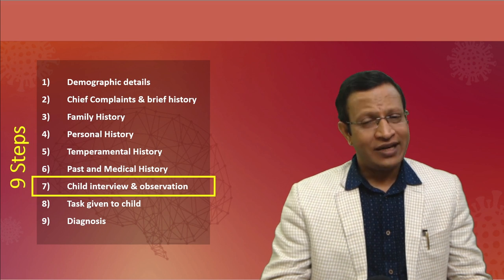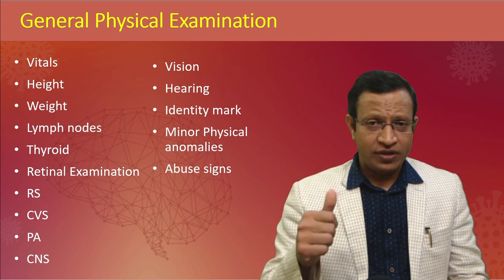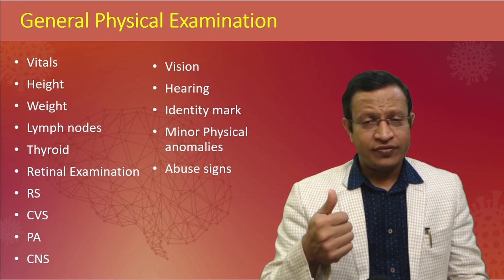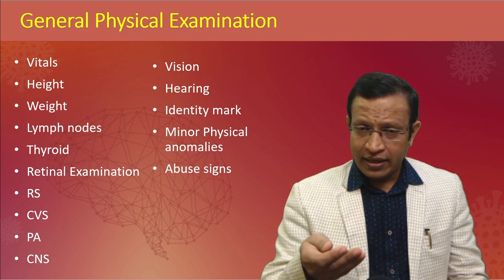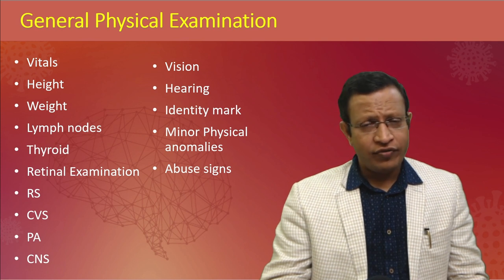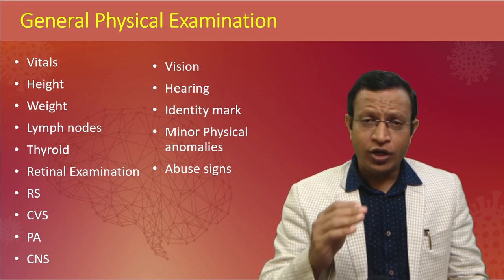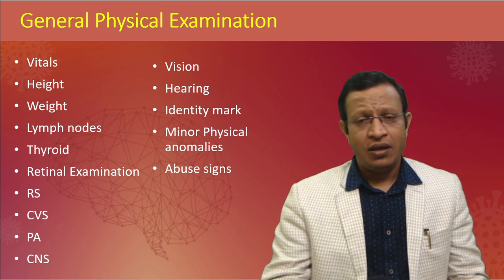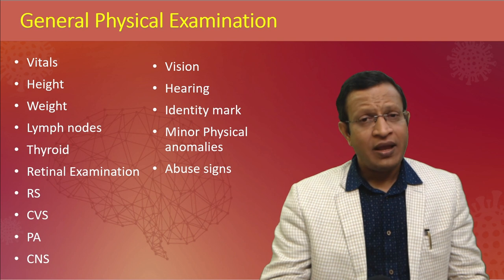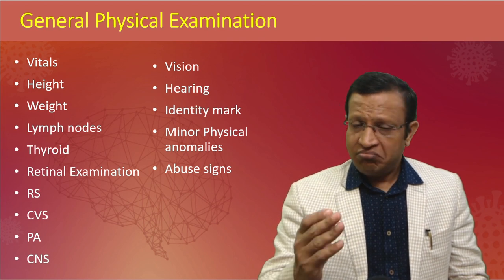For child interview and observation — essentially mental status examination along with general physical examination — check vitals, height and weight for BMI, and head circumference. Ask about vision or hearing problems, which may present as academic decline. Check for minor physical anomalies and signs of physical abuse. If hereditary or genetic examination or genital examination is required, take parental consent and have one parent accompany the child. Never conduct any physical or genital examination in the absence of parents. Psychologists and social workers should never attempt general physical examination, as this may lead to legal problems.